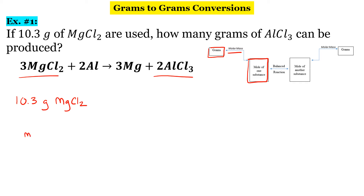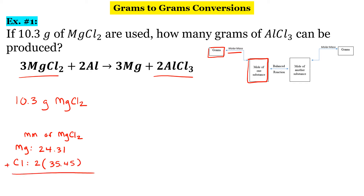The molar mass of magnesium chloride: magnesium, if we look that up on the periodic table, is 24.31. And then we have chlorine — we have two of them, so two times 35.45. If we add those up, we get 95.21 grams per mole. So to convert our 10.3 grams of magnesium chloride to moles, we use 95.21 grams of magnesium chloride for every one mole of magnesium chloride.